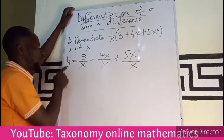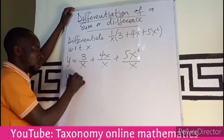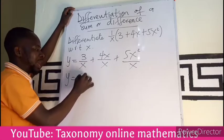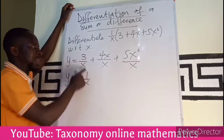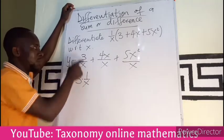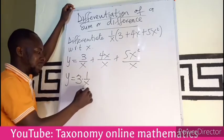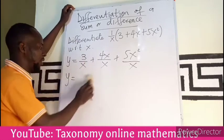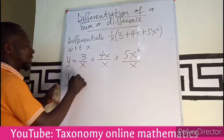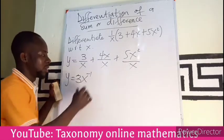So y is just going to be, we can rewrite this as 3 multiplying 1/x. If I want to write this, the 3 will multiply 1 divided by x to give me this value, and 1/x can also be written as x^(-1).